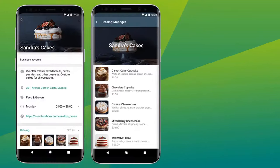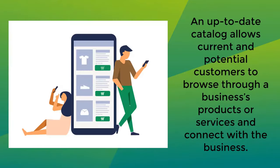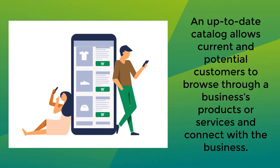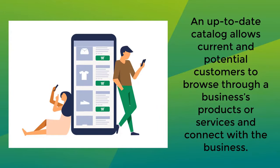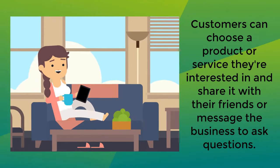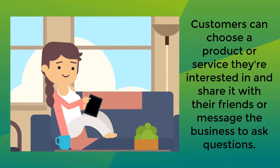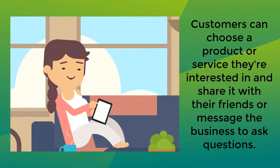This identifier makes it easy for customers to identify products in the catalog. Business owners can upload a maximum of 500 products or services to their catalog. An up-to-date catalog allows current and potential customers to browse through a business's products or services, connect with the business, and ask questions.